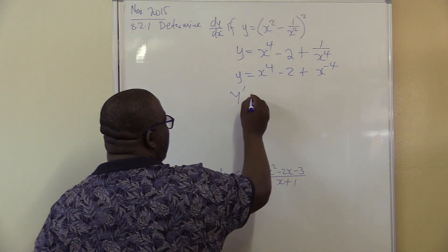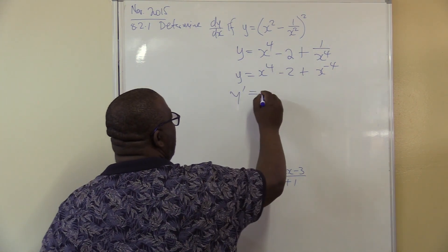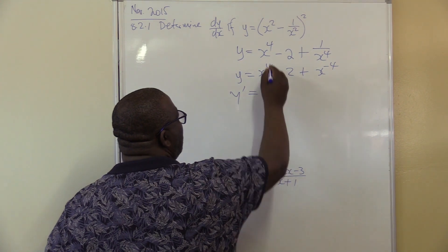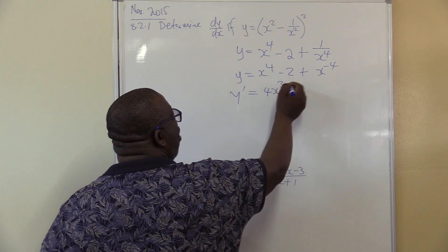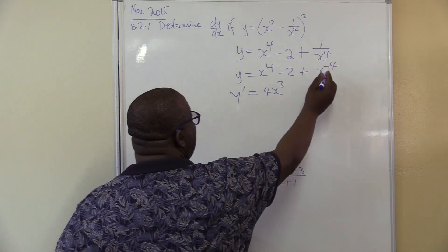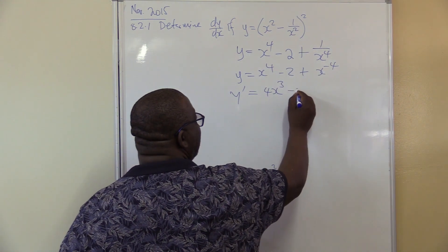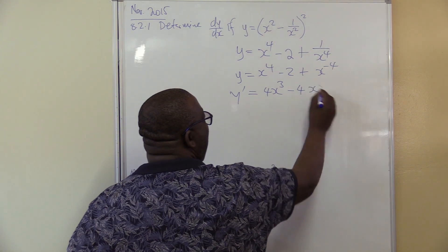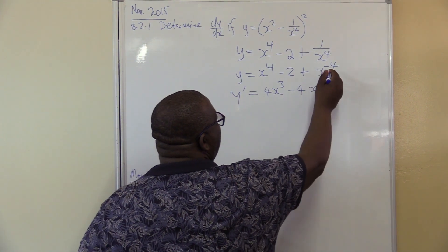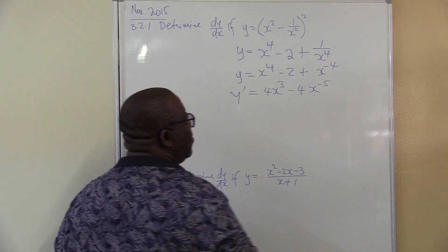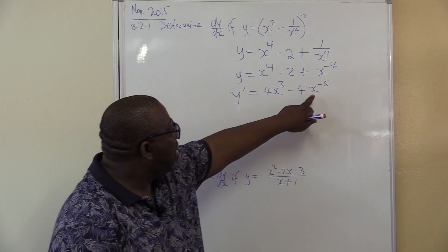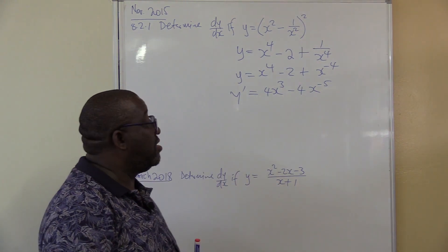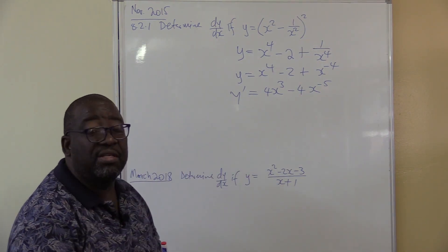I indicate that I'm now differentiating. This then will be equals, this is 4x to the power 3. So it's 4 minus 1, it's 3. If I differentiate a constant, it becomes 0. Take this one that side, it will be minus 4x to the power minus 1, it will be minus 5. That's what we have. You can leave it in that form or you can take this x down so that it will be positive 5. But I'm happy with leaving it in that form.